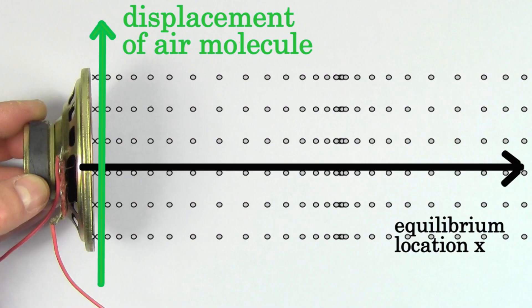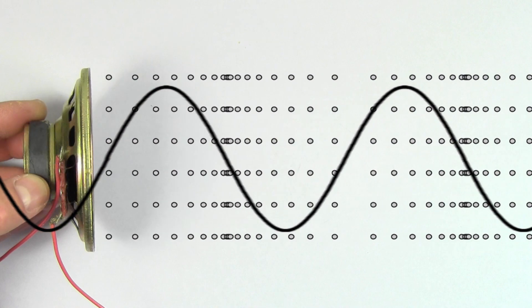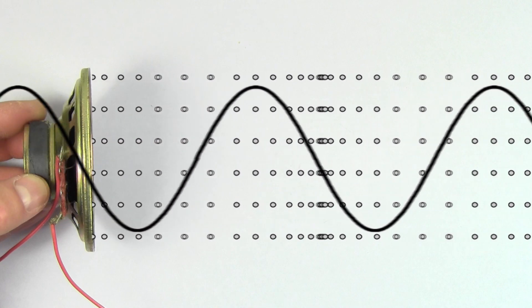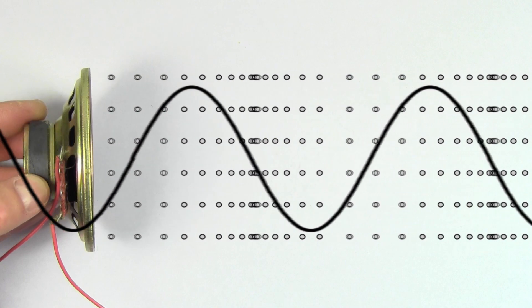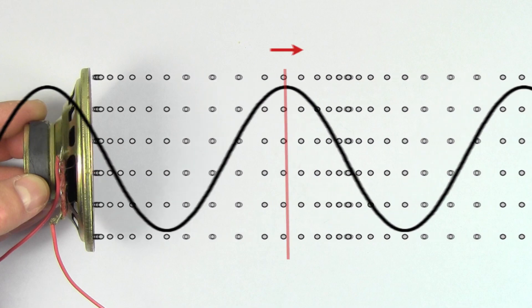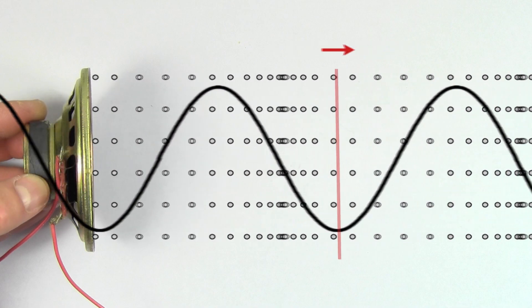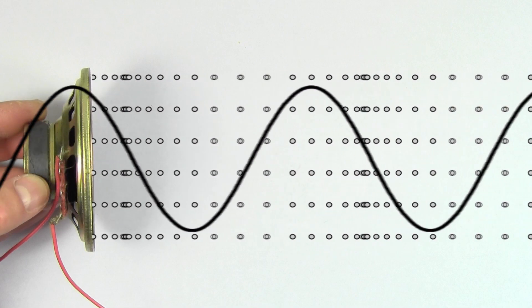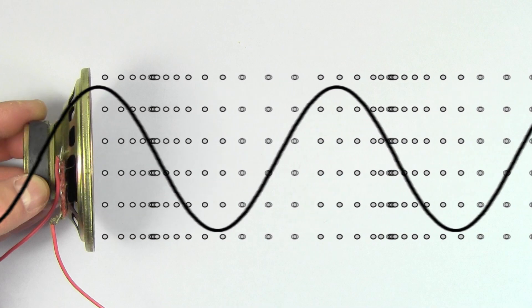If we look at a graph of the air displacement versus position of the air, we can see that as the wave travels, the shape of this wave travels to the right. So the speed of a sound wave can be found by finding the speed of the peaks, or the speed of the valleys, or the speed of any single point on the wave shape.